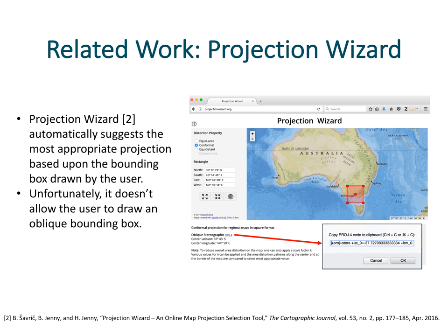The closest I could find to what we want is a tool called Projection Wizard, designed as part of a research paper published in 2016. Projection Wizard allows the user to draw a bounding rectangle around the area of the globe they're interested in, and from that it automatically generates the Proj4 string that can be used to reproject the data. The issue for our use case is it doesn't allow drawing a rotated rectangle, which means if you want to use the oblique Mercator projection, you still have to manually calculate the azimuth angle. Furthermore, it's essentially just solving one step of the larger problem — the user still needs to copy and paste that Proj4 string into a GIS to reproject their data.